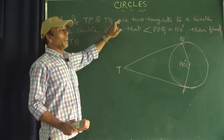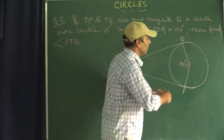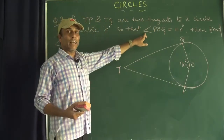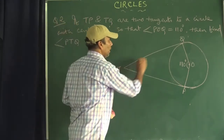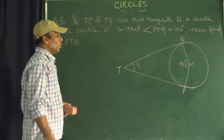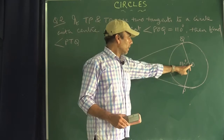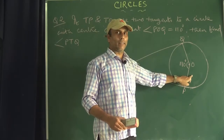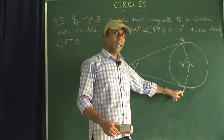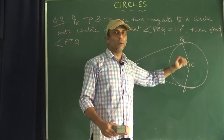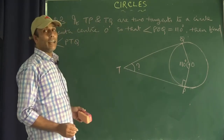In the diagram, TP and TQ are two tangents to the circle with centre O. Angle POQ is 110 degrees. We need to find angle PTQ. Recalling the theorem: the tangent is perpendicular to the radius at the point of contact. So TP is perpendicular to OP, giving angle OPT equal to 90 degrees.